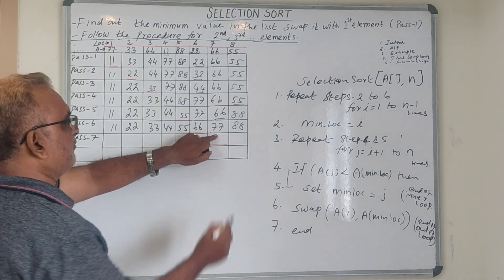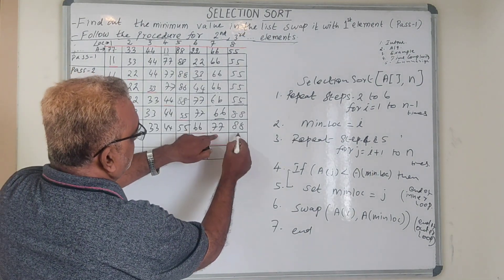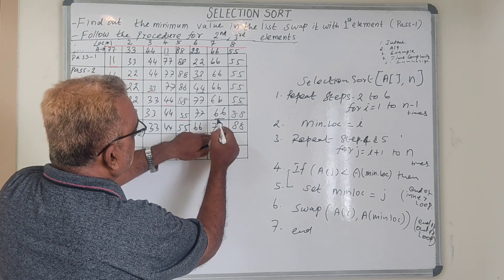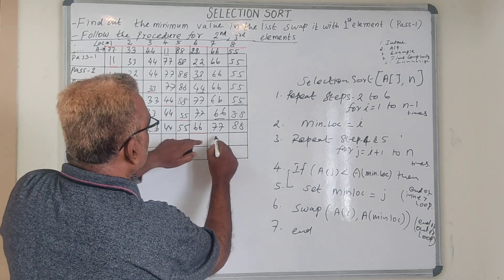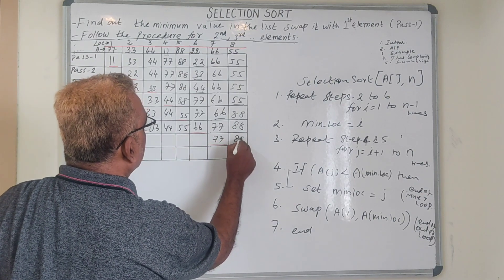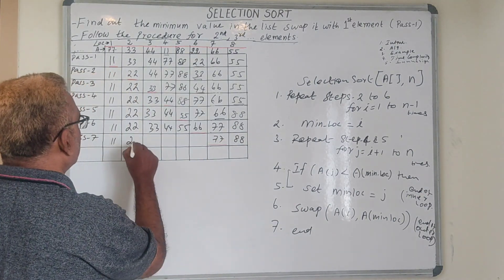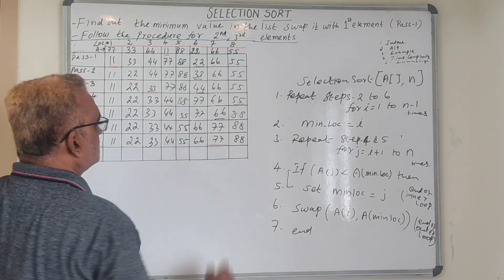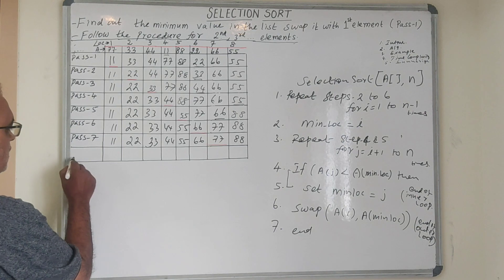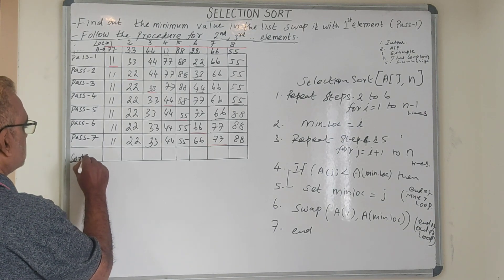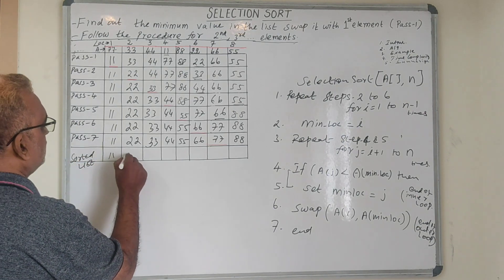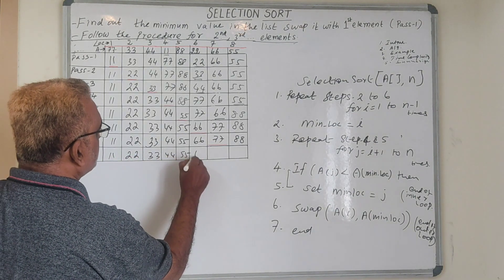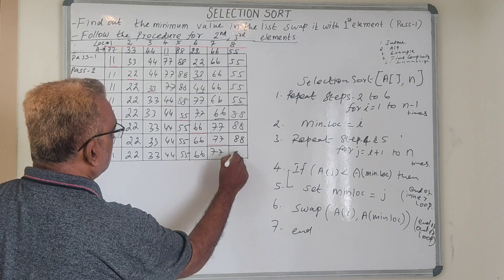Now we perform the checking with the seventh element. Comparing, the seventh element 77 is lesser than 88, so no swap is needed — it stays as it is. 33, 44, 55, 66. And finally we have the sorted list: 11, 22, 33, 44, 55, 66, 77, and 88.